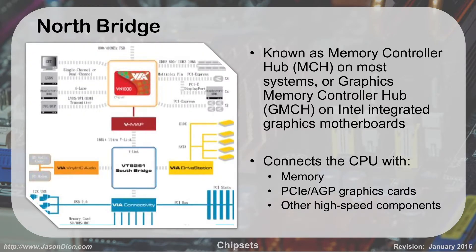So what is the North Bridge? The North Bridge is known as your Memory Controller Hub on most systems. If you have Intel, they like to call it the Graphics Memory Controller Hub. So if you see MCH or GMCH, we're talking about the North Bridge. What it's going to do is connect your CPU with the high-speed portions of your computer — that's your RAM, your memory, your AGP or PCIe X16 graphics cards, and any other high-speed components like that.